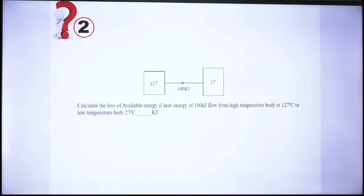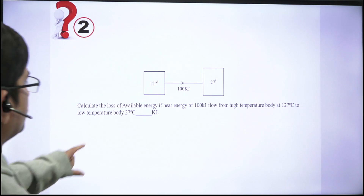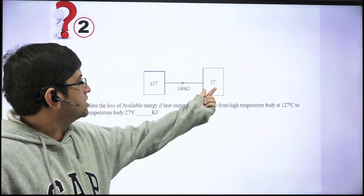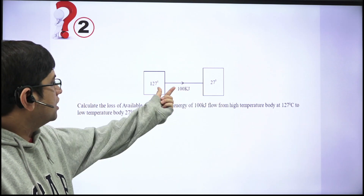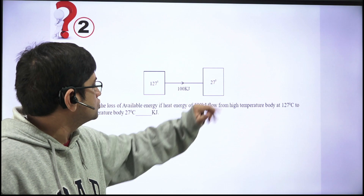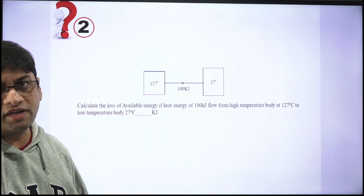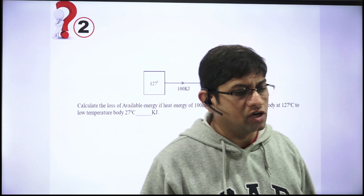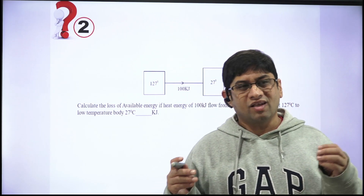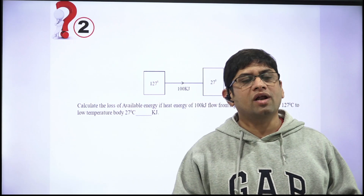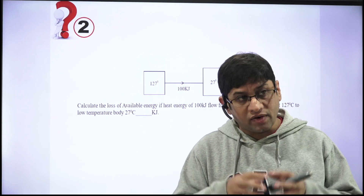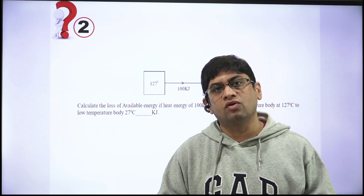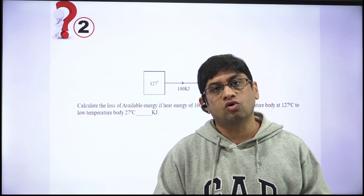Question 2: Find the loss of available energy if 100 kJ of heat energy flows from a high-temperature body at 127°C to a low-temperature body at 27°C. Available energy is the concept of how much maximum theoretical work I can extract from Q. If I have Q heat energy, the maximum theoretical work I can extract — that is called available energy.